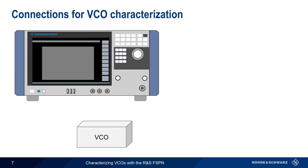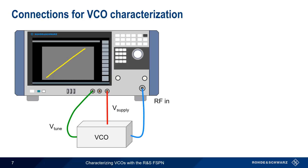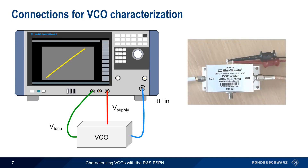Let's look at how these voltage sources are connected. In most cases, the VCO will be powered from the FSPN using the V-supply connector, typically at a fixed voltage such as plus 12 volts. The other voltage connection is V-tune, which usually provides the variable voltage that controls the oscillator frequency. The oscillator output is always connected to the FSPN RF-in connector. In this example, V-supply is connected to plus 12 volts and ground, V-tune to the control connector, and the output to RF-in.